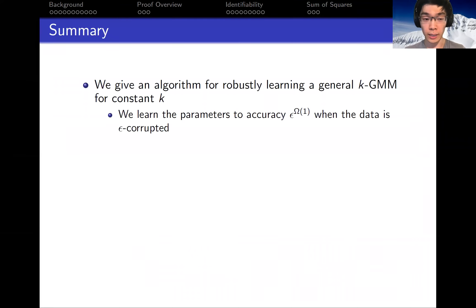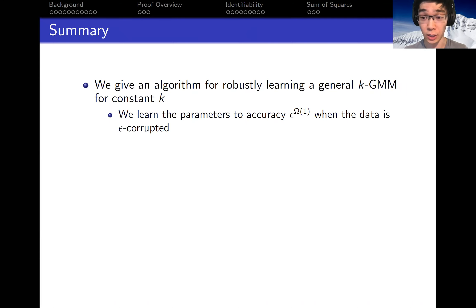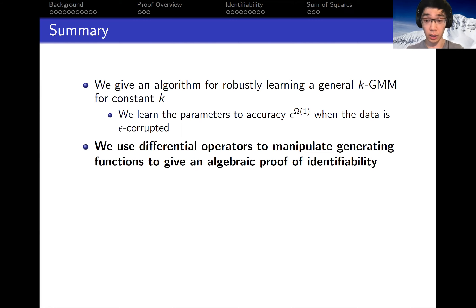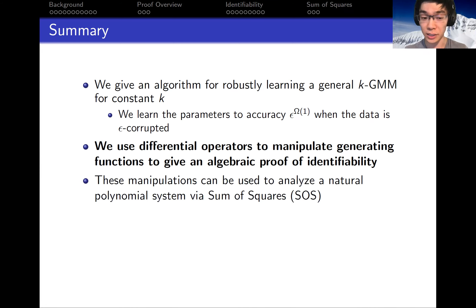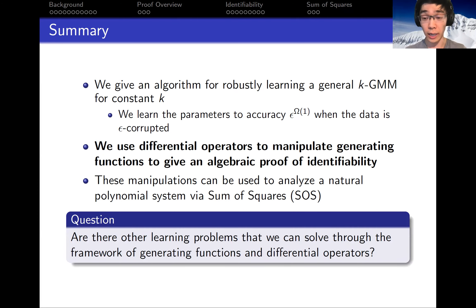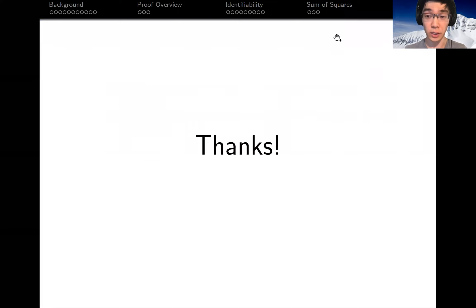To conclude: in this talk we gave an algorithm for robustly learning a general mixture of Gaussians up to poly(epsilon) accuracy when our data is epsilon-corrupted. We gave a novel use of differential operators and generating functions to give an algebraic proof of identifiability, which is then translated into an algorithm via sum of squares. The main open question I'd like to pose is: are there other general learning problems that can be solved using this generating function and differential operator approach? That's all for the talk — thanks for listening.